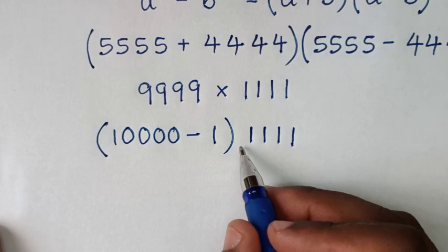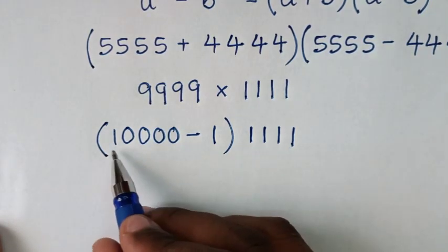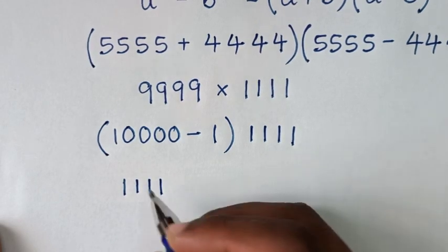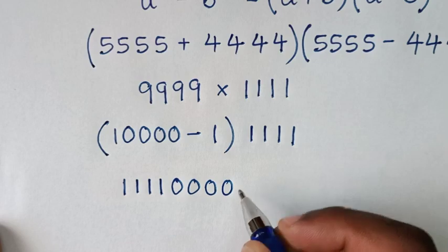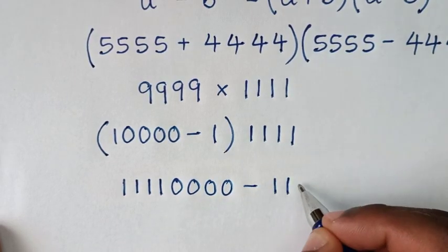Then in the next step, we'll take this inside the bracket, so it will be 1111 times 10,000, which is 1111 with four zeros, minus 1 times 1111.